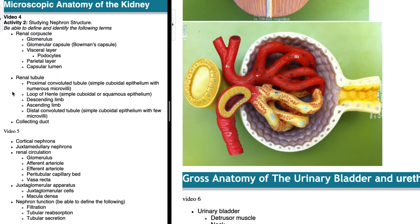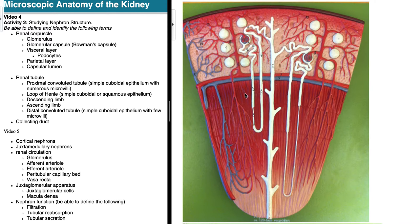Looking at this region of the sheet, we're moving from Video 4 down to Video 5. The three least-indented terms are our three basic categories: the renal corpuscle, the renal tubule, and the collecting duct — covering everything from renal corpuscle down to collecting duct.